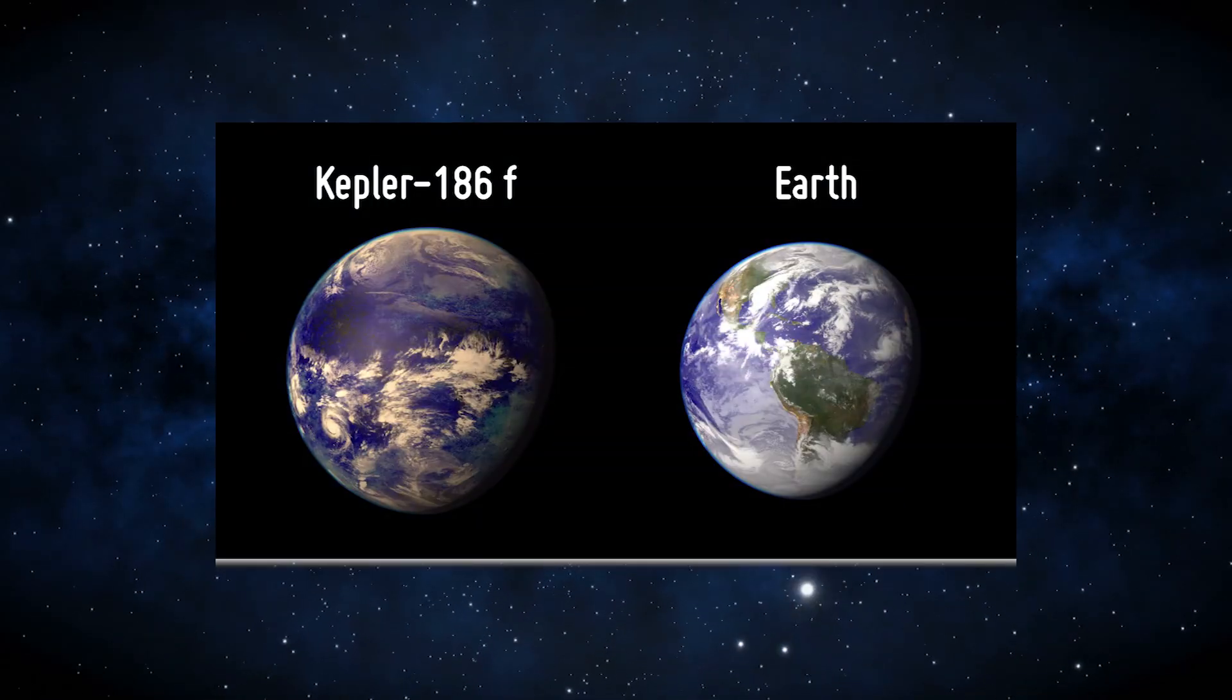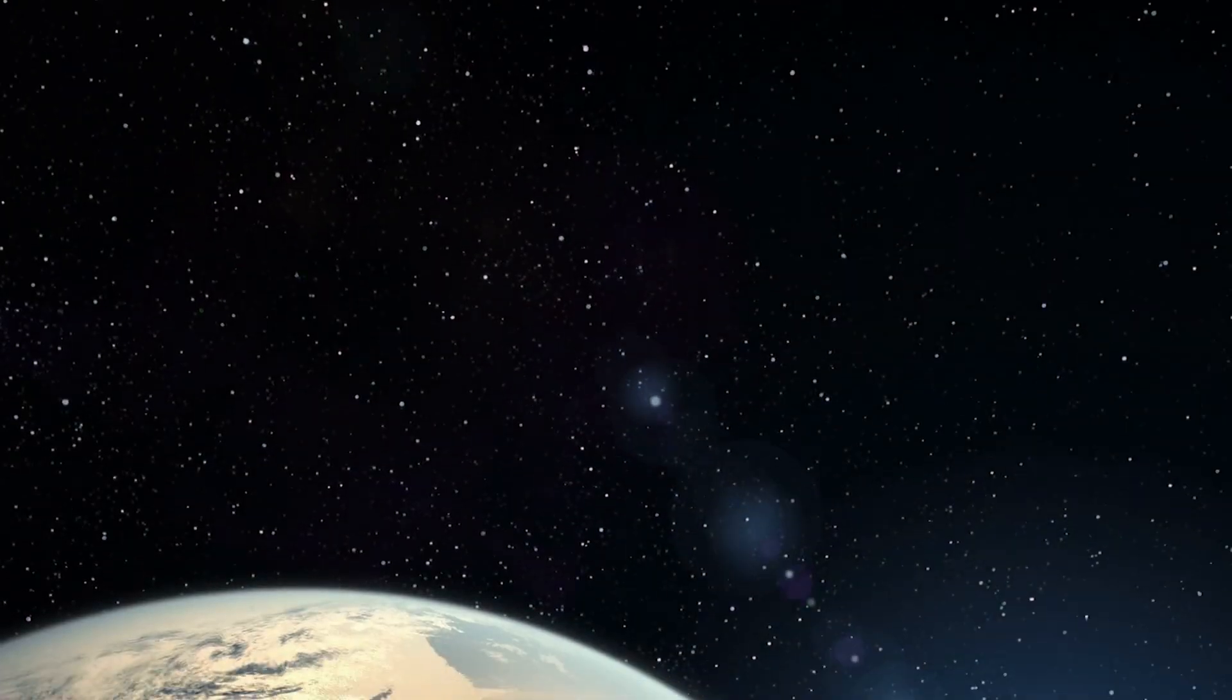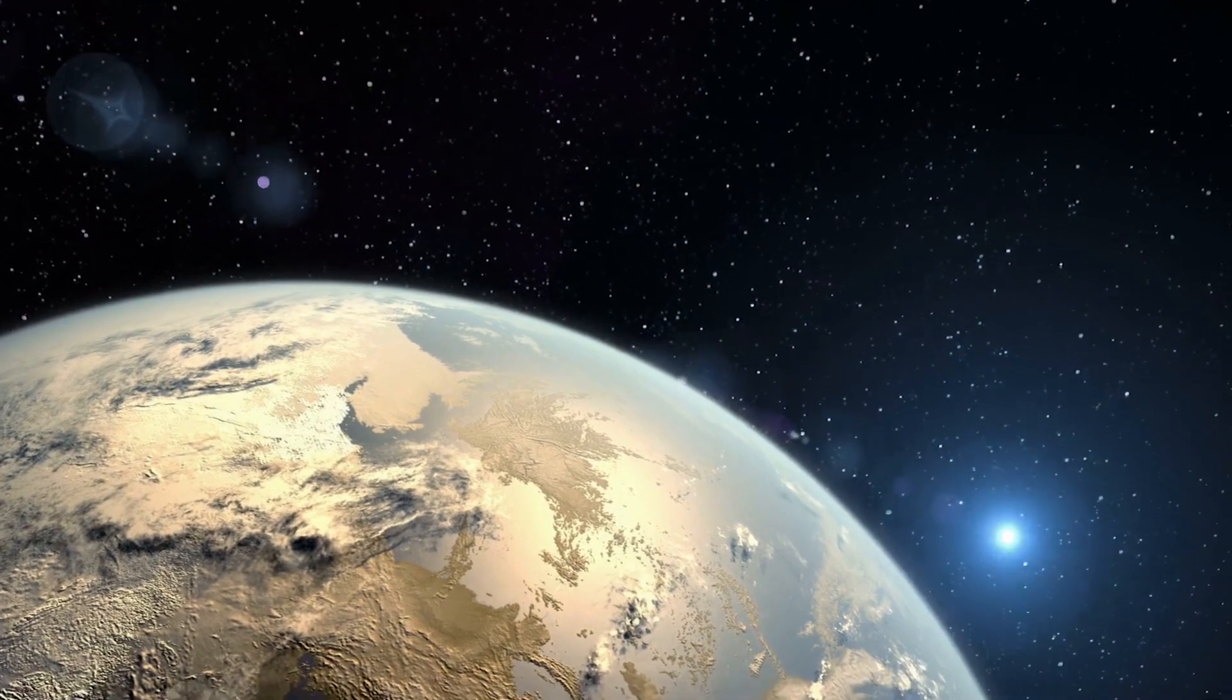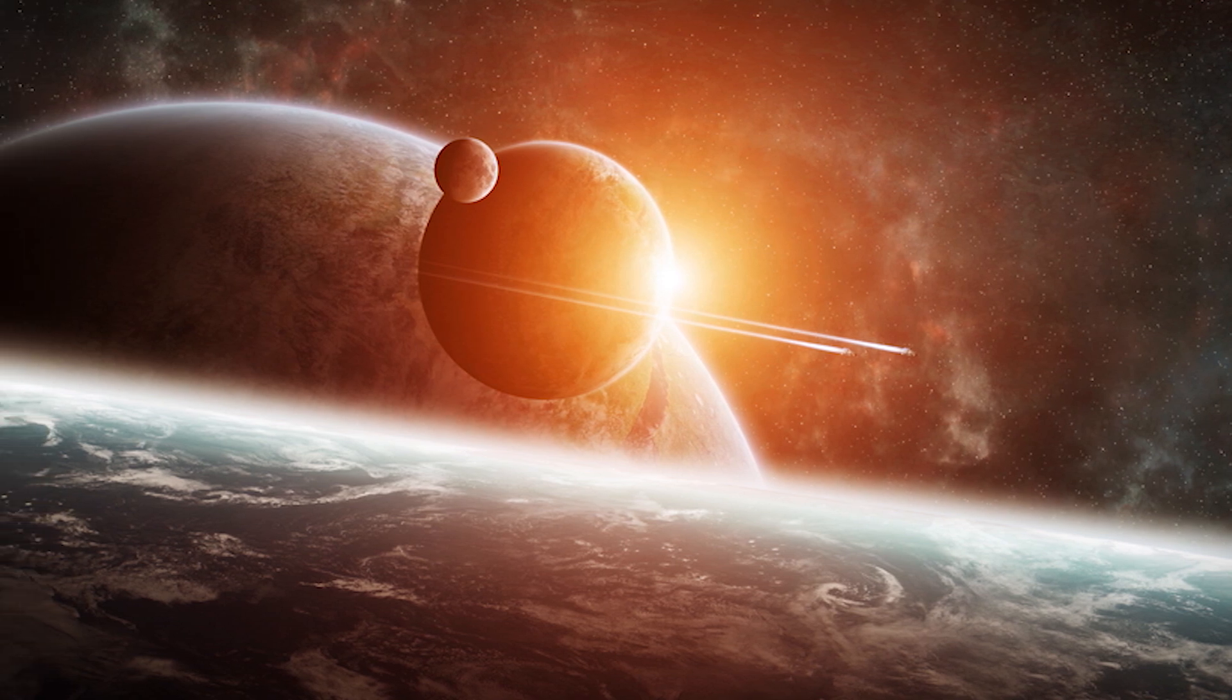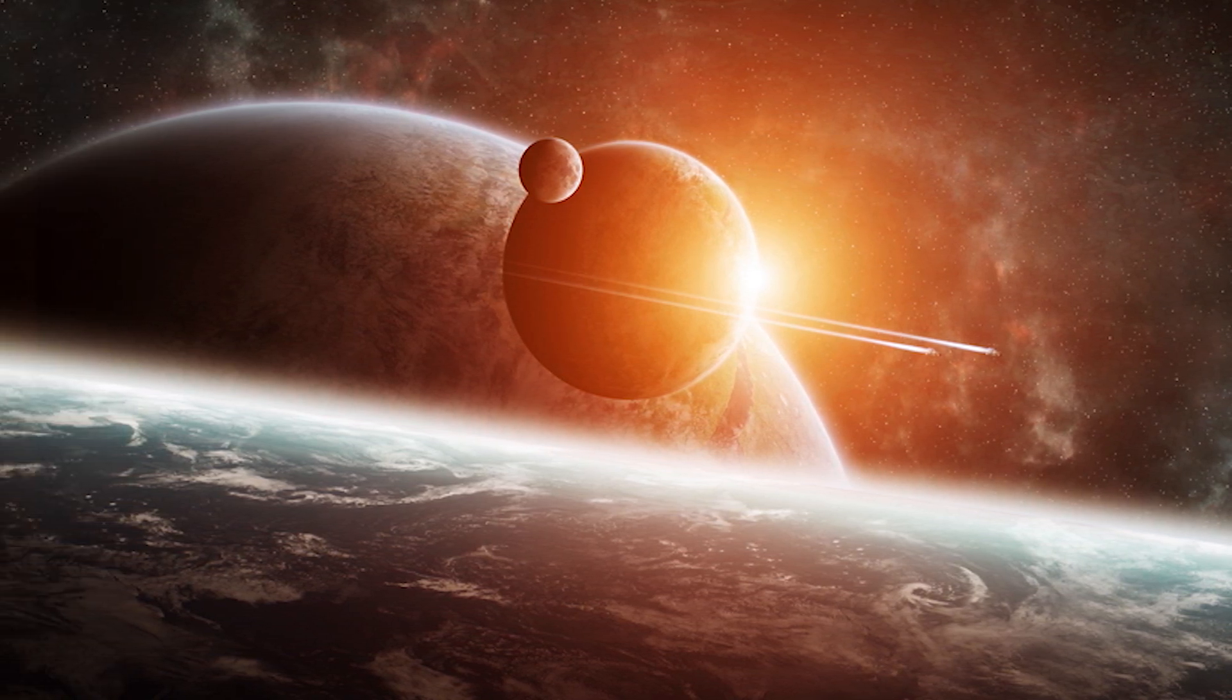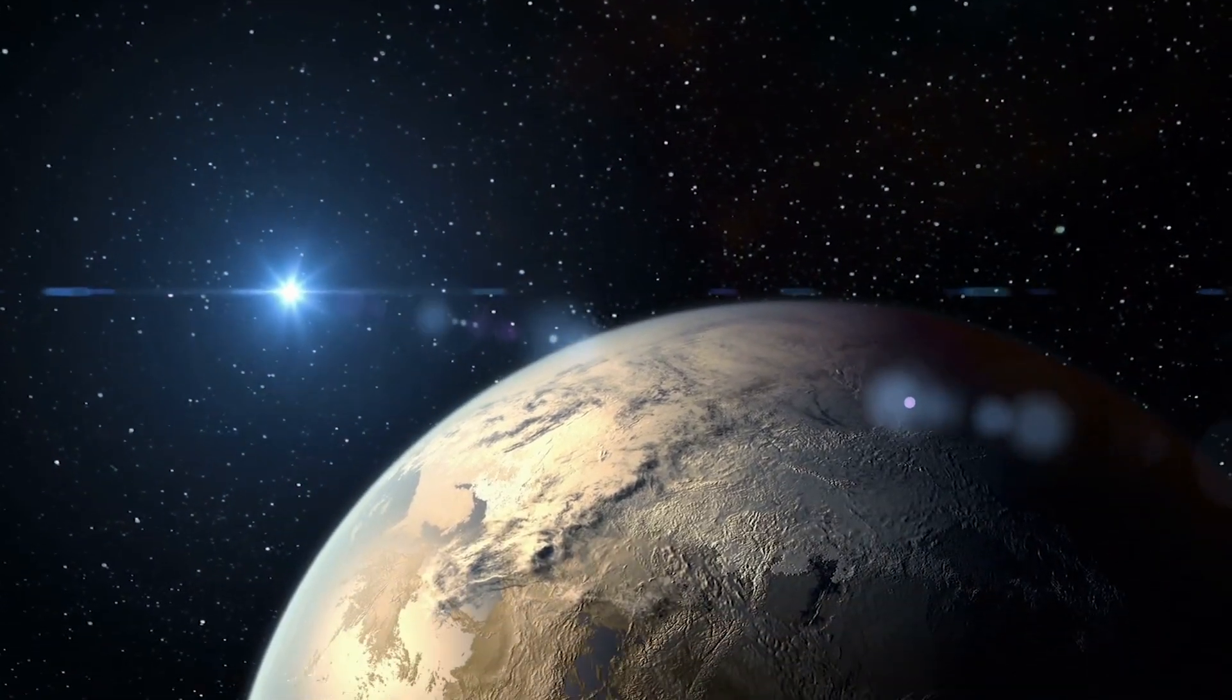If it were to have a rocky surface, it would have similar gravity to Earth. They tend to believe that the surface is indeed rocky, and the M dwarf star Kepler-186 has been around long enough for life to possibly develop. Since it's somewhat further out in the Goldilocks zone, the water here could be frozen, but since it's larger, the atmosphere could be thick enough to keep the planet warmer. If only we had a spaceship to get us there 490 light-years away, maybe we can find the aliens hiding there.